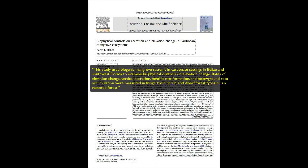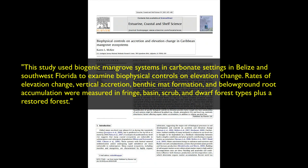The next section describes how I conducted the study. This study used biogenic mangrove systems in carbonate settings in Belize and southwest Florida to examine biophysical controls on elevation change. Rates of elevation change, vertical accretion, benthic mat formation, and below-ground root accumulation were measured in fringe, basin, scrub, and dwarf forest types, plus a restored forest.